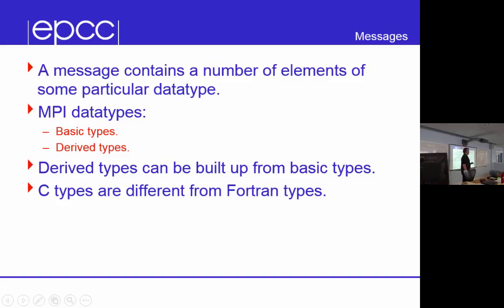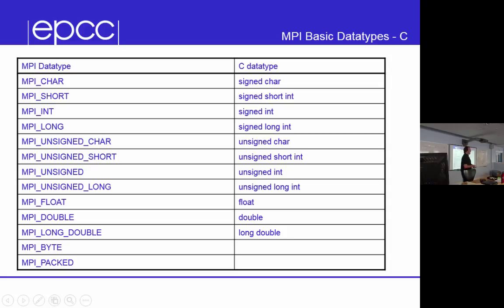C types are different from Fortran types. The interface to MPI, other than the calling convention, is identical for C and Fortran. But because C and Fortran have different types, the C types are different from the Fortran types. So whenever you send a message in MPI, you have to say what the type is.